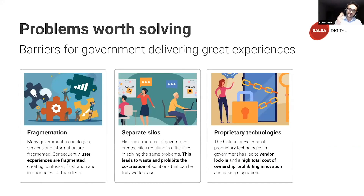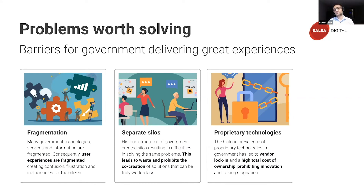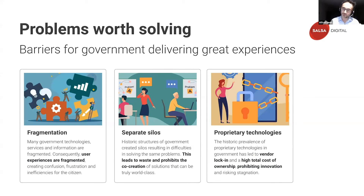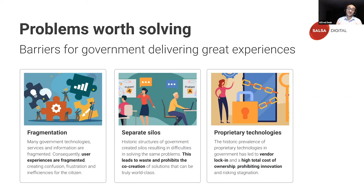There are three barriers that make it difficult for governments to deliver quality information and great user experiences. Barrier one is fragmentation: many governments' technologies, services, and information are fragmented, so user experiences are also fragmented, creating confusion, frustration, and inefficiencies for the citizen. Barrier two is silos — historic structures of government have created silos, resulting in difficulties solving the same problems, leading to waste and prohibiting the co-creation of world-class solutions. The third barrier is proprietary technologies: the historic prevalence of proprietary technologies in government has led to vendor lock-in and high total cost of ownership, which consequently prohibits innovation and risks stagnation.